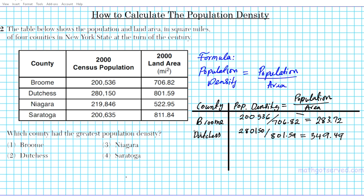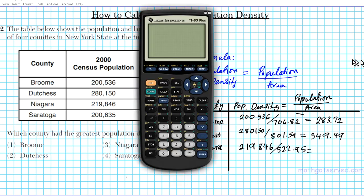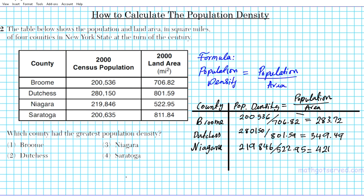Now let's calculate the population density for Niagara County. The population is 219,846, divided by the land area of 522.95 square miles. Entering that into the calculator gives us a population density of 420.40.